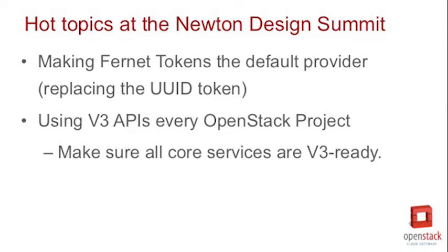Keystone plays an important role in any OpenStack cloud — it needs to be reliable, efficient, and quick to respond. Coming out of the Austin design summit, two really interesting discussions were with the operators. The first was the impact of making the Fernet token the default provider. Previously the default had always been the UUID token, which is very simple and stores tokens in a database. The Fernet token has been around for a few releases and does all validation offline, so it's a lot quicker and Keystone will scale better.